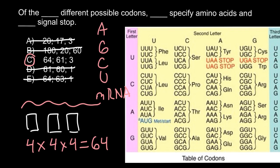So we can cross out answer E. Of 64 different possible codons, 61 specify amino acids, and three of them signal stop codon.